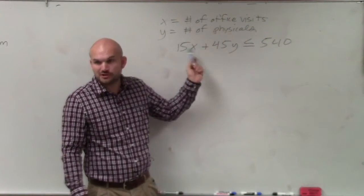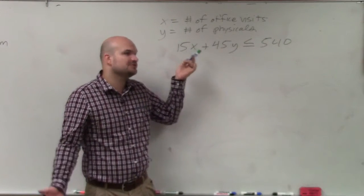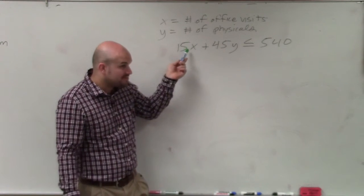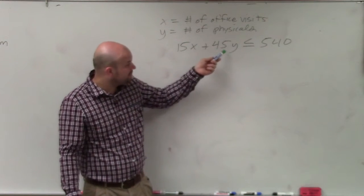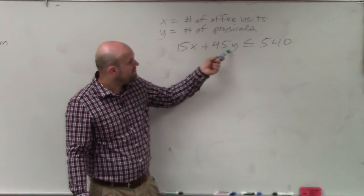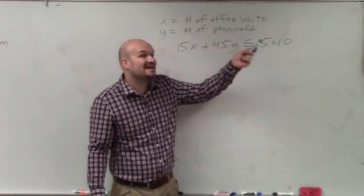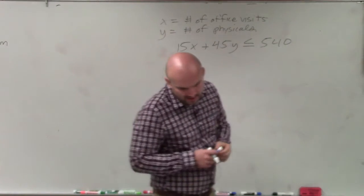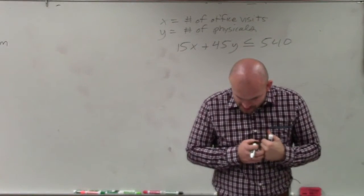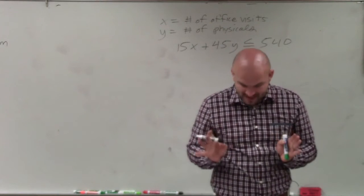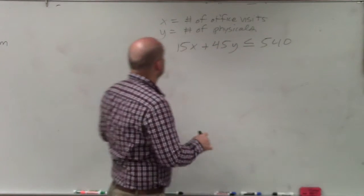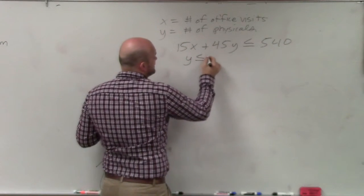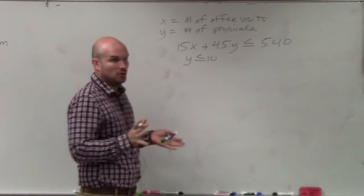It's either that or you convert your minutes to fractions of an hour, which you could do, but then we have to deal with fractions. So 15 minutes for an office visit, 45 minutes for a physical has to be less than or equal to 540 minutes. That's as much time he has in the office. Now, we also know that the physicals, he cannot do more than 10 physicals per day. So his physicals, y, has to be less than or equal to 10.